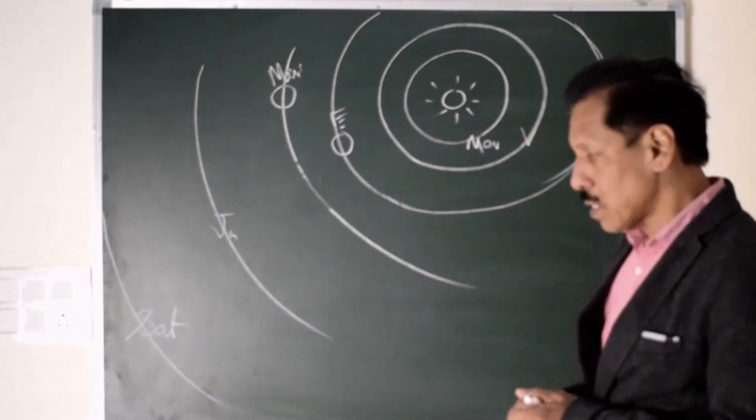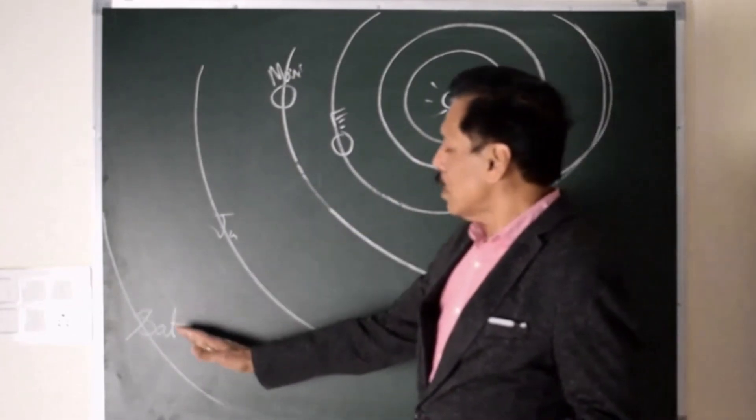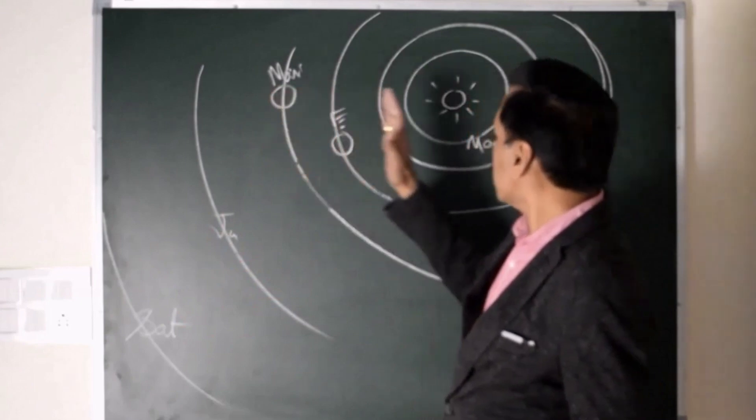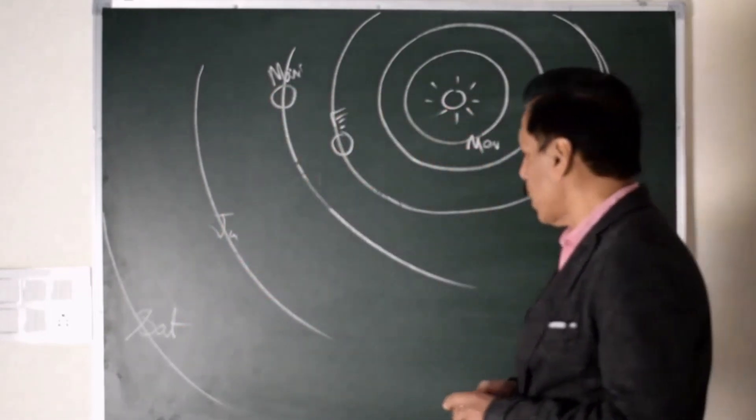If you talk about navigational planets, Saturn, Jupiter, Mars and Venus. These four planets are the navigational planets.